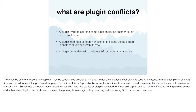Plugin conflicts are of course one of the most common things we're going to run into. If it's not immediately obvious what plugin is causing the issue, usually you would turn off each plugin one at a time, reload, and check if the problem is still happening. Sometimes this isn't possible because the functionality you need to test is an essential part of the current theme or a critical plugin — if you're having a problem with WooCommerce, you can't exactly turn off WooCommerce to see if that fixes it. Sometimes a problem won't appear until you have two particular plugins activated together, so you may have to test things in combination. If you're getting a white screen of death and can't get to the dashboard at all, you can temporarily turn the plugin off by renaming its folder in FTP or at the command line.